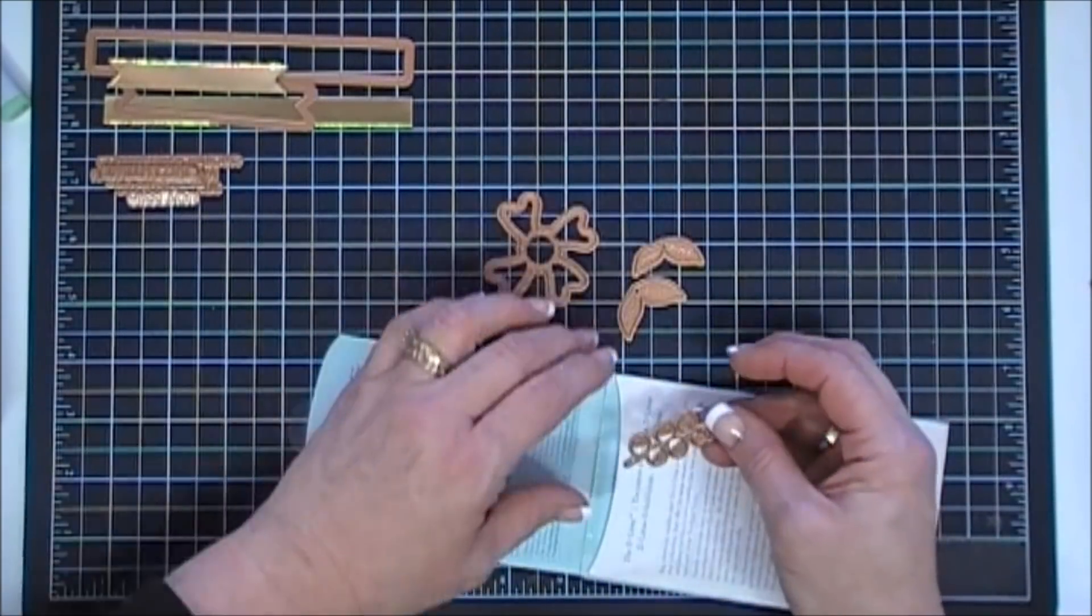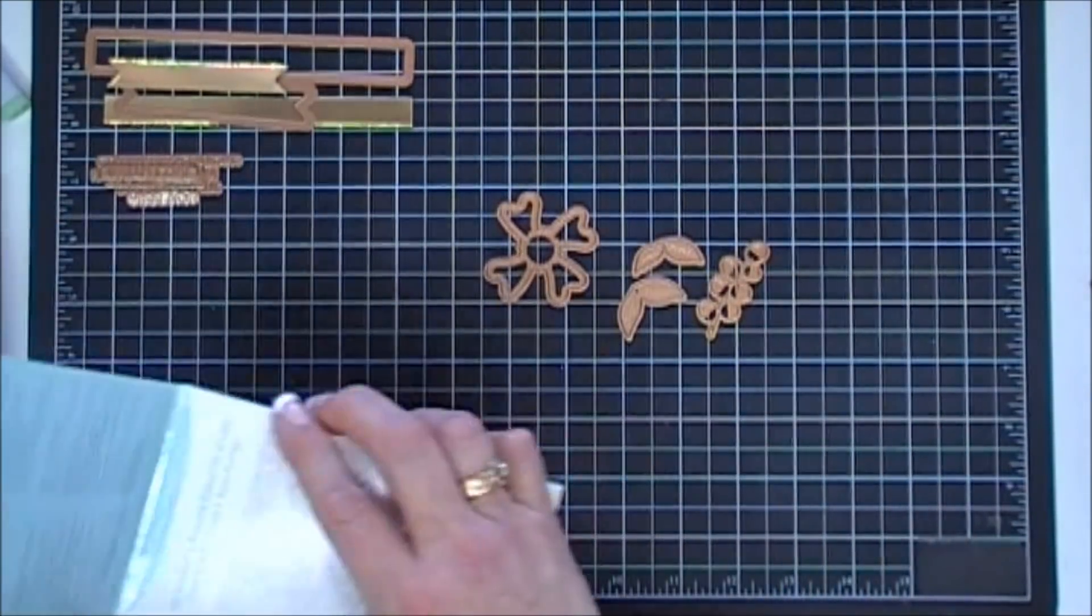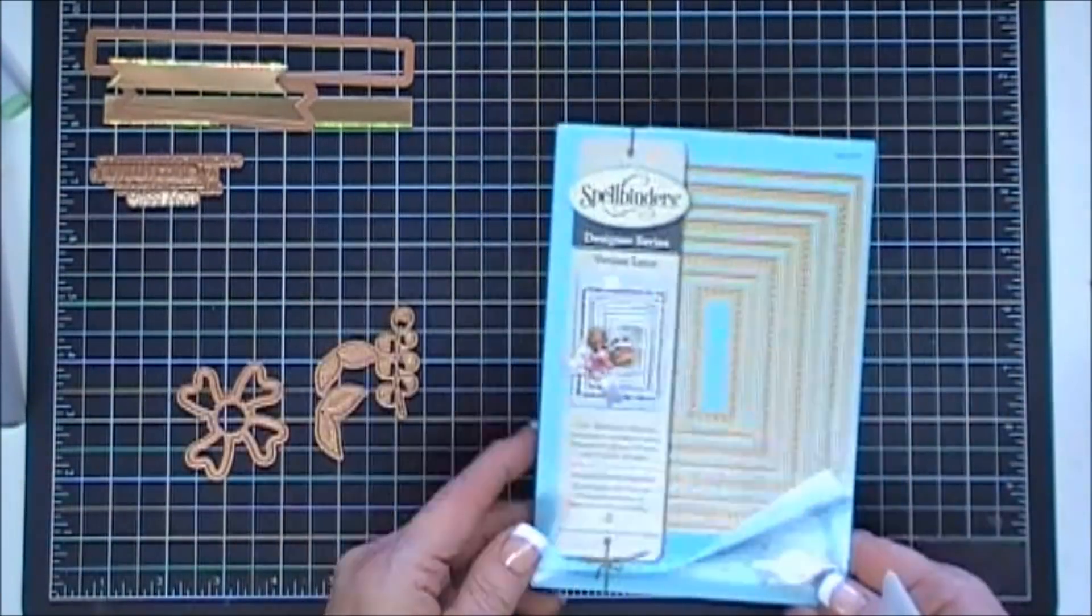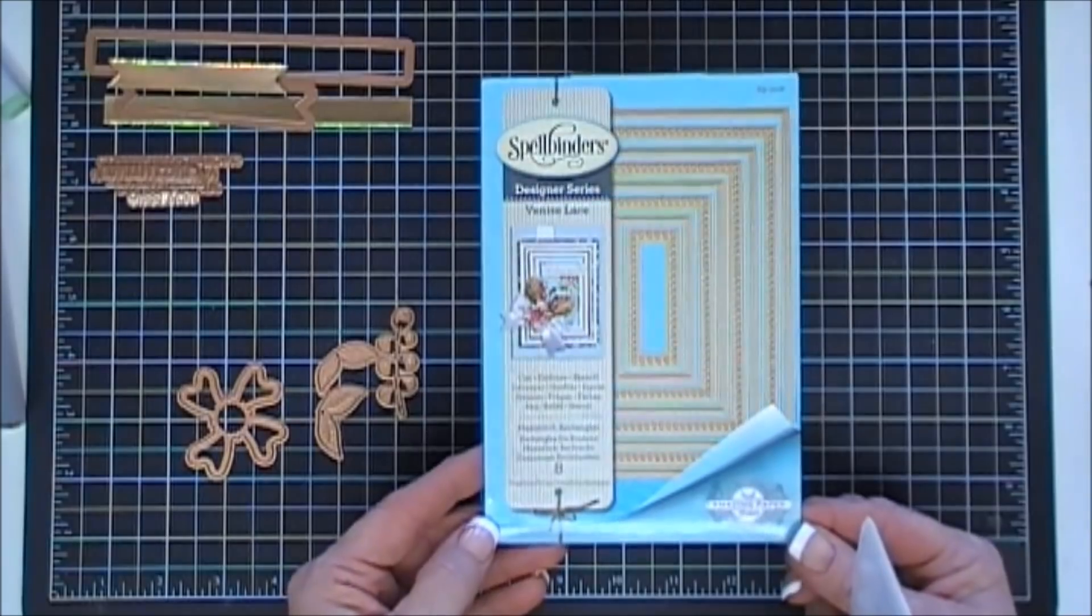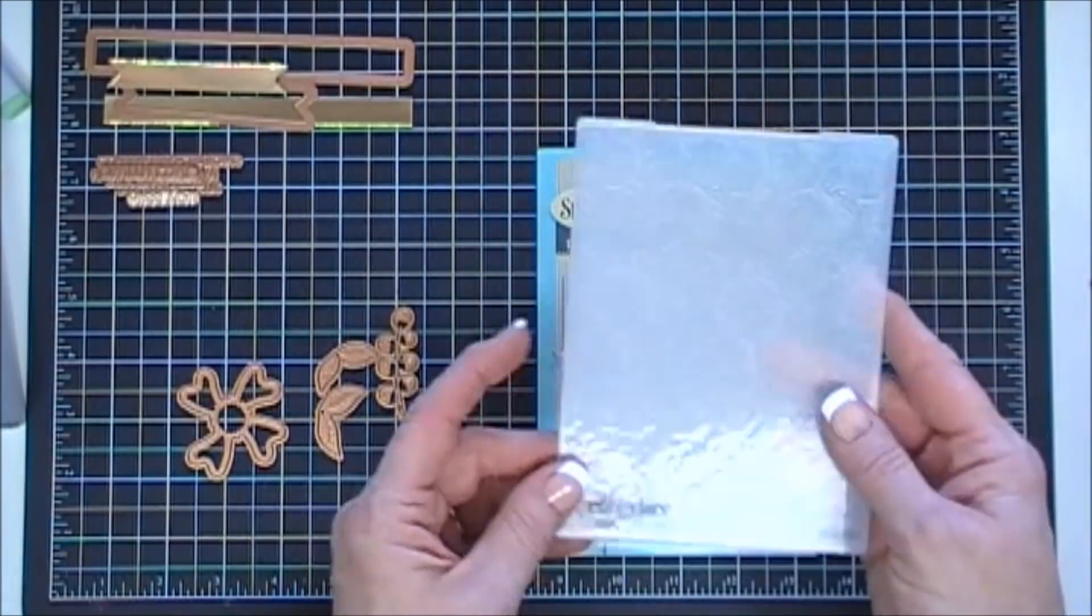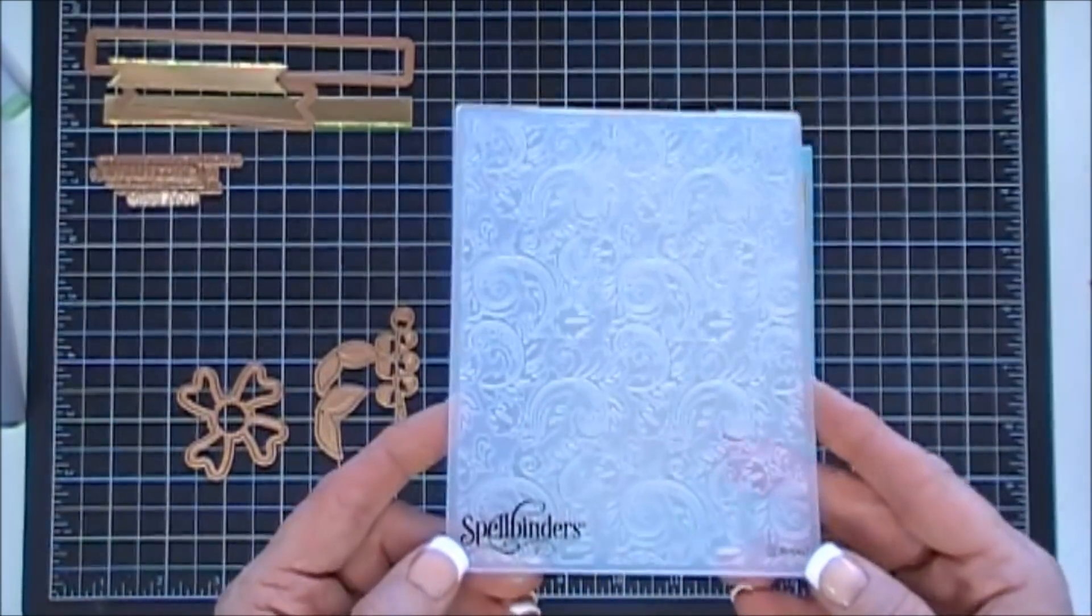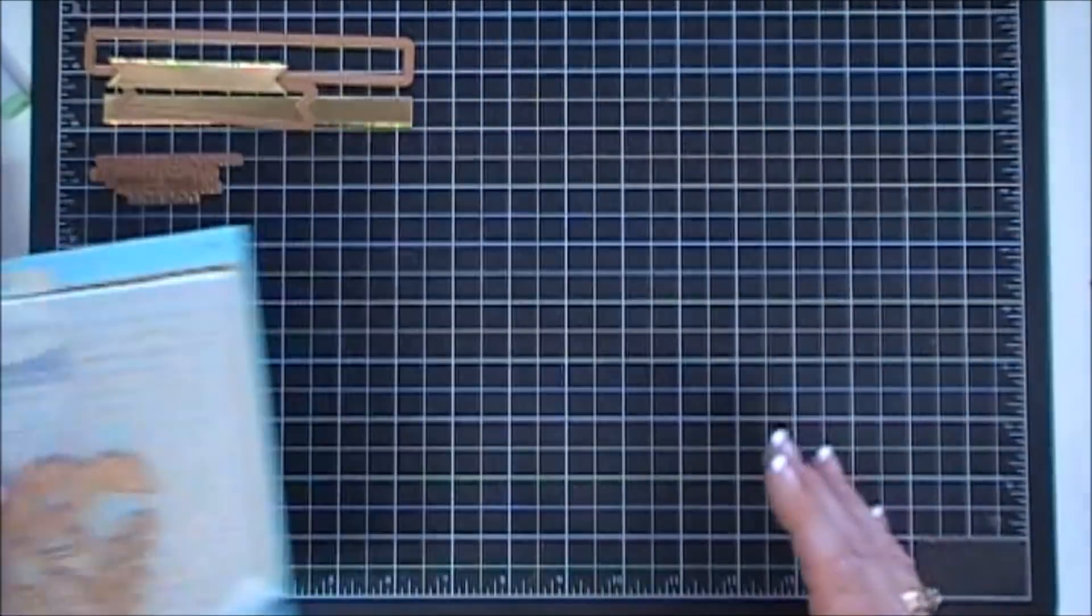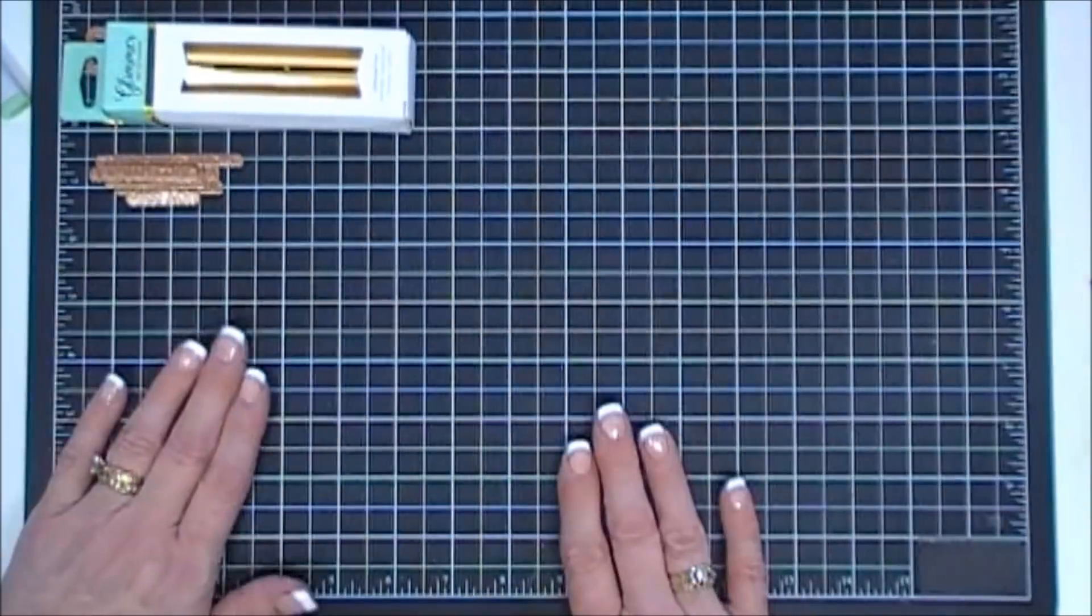We're going to be using this die set from Spellbinders, it's called the Stylized Flower. We're going to use a few flourishes from there and then a few of the leaves. I'm also going to bring in a die set called Hemstitch Rectangles, this is a rectangle set.